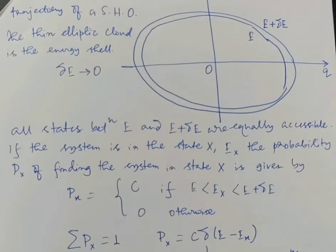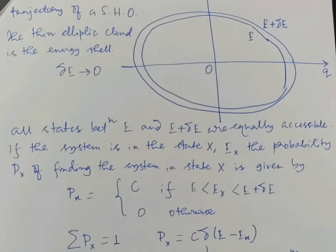According to the fundamental postulate of equal a priori probability, under the condition of equilibrium the system is equally likely to be found in one of its accessible states. In the case of the microcanonical ensemble, all states between E and E plus delta-E are equally accessible. Therefore, the probability p(x) of finding the system in state x is given by p(x) equals constant c if the energy E(x) lies between E and E plus delta-E, and zero otherwise. The constant c is determined from the normalization condition: the sum of p(x) over all accessible states equals one.